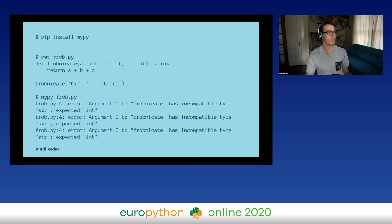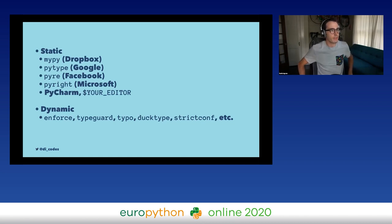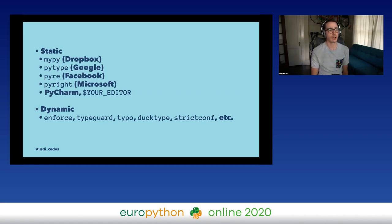You would install it from pip, create a Python file, define it, and then run MyPy on it. It would tell you when you're using types correctly or incorrectly. There are actually lots of static type checkers and dynamic type checkers as well. All the big Python shops have their own: Dropbox basically owns the development of MyPy; Google has PyType; Facebook has Pyre; Microsoft has Pyright; and some editors like PyCharm have type checkers built in. There are also dynamic type checkers, though those are less popular because they add overhead at runtime.